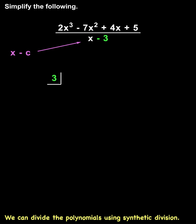It's very important to understand that the number that goes inside the box always uses the opposite sign of the constant term in the binomial. In other words, since the constant term in the binomial is negative 3, the number that goes inside the box is positive 3.